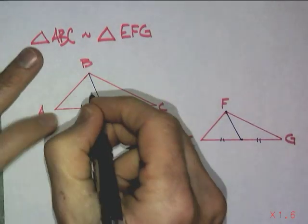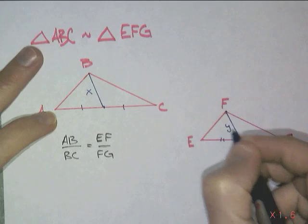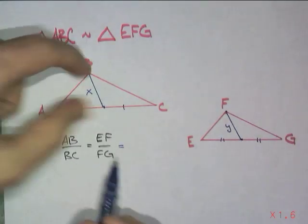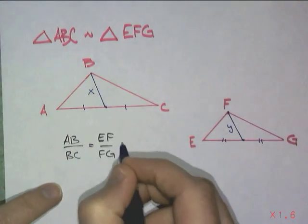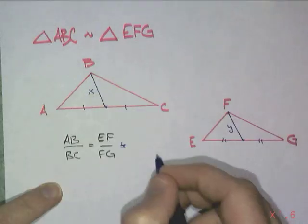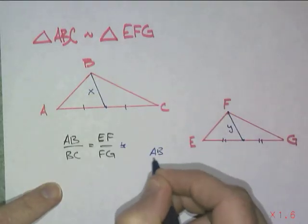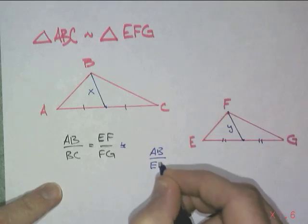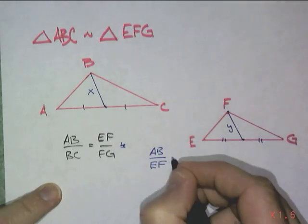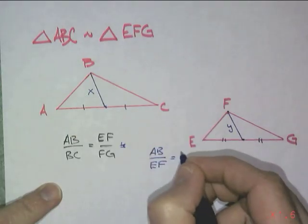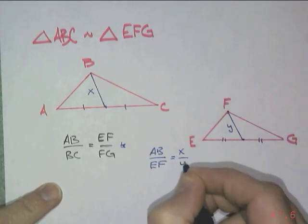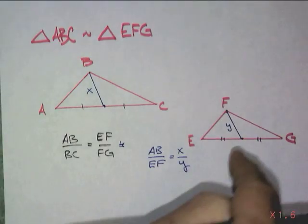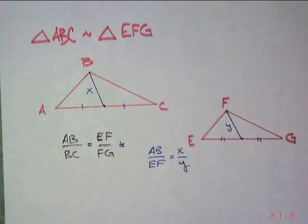If this median is X and that one is Y, I'm not doing AB to BC — let's go AB compared to EF. That would be the same ratio as X compared to Y, the median of this triangle compared to the median of the other triangle.